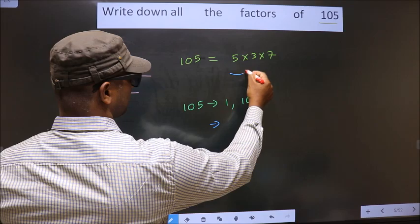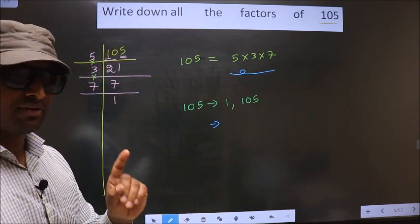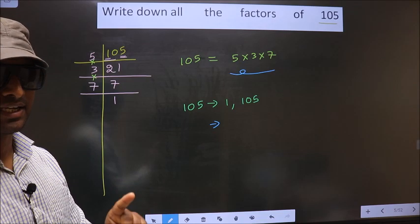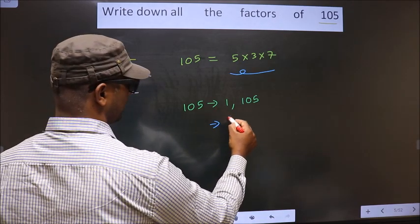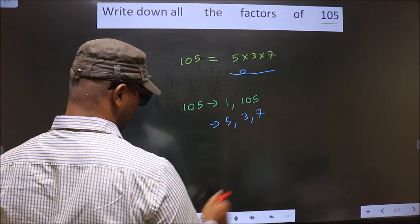Now from these numbers, you select one different number at a time. So we get 5, 3, and 7. That's it.